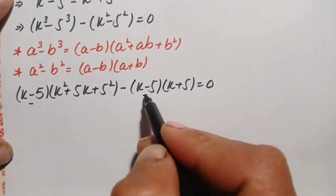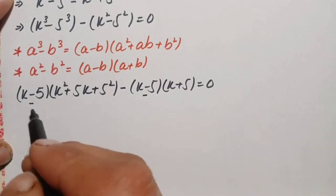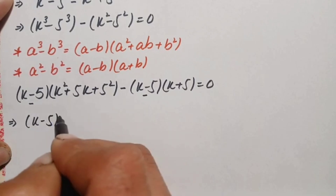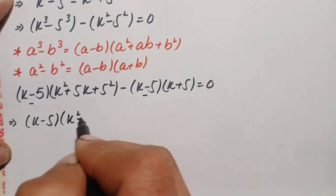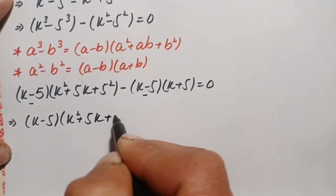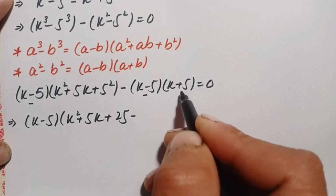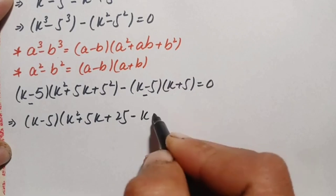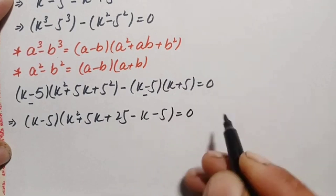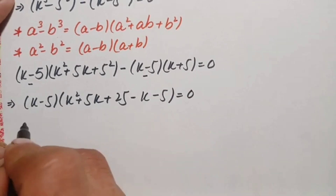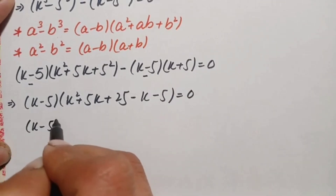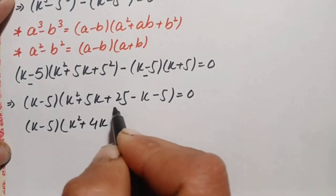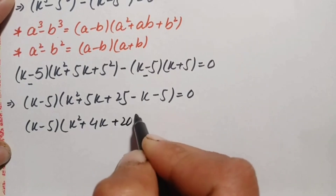We can see that (k minus 5) is common in both expressions. Taking out (k minus 5) as a common factor, we are left with k squared plus 5k plus 25 from the first term, and after multiplying in the negative sign, we get minus k minus 5 from the second term.